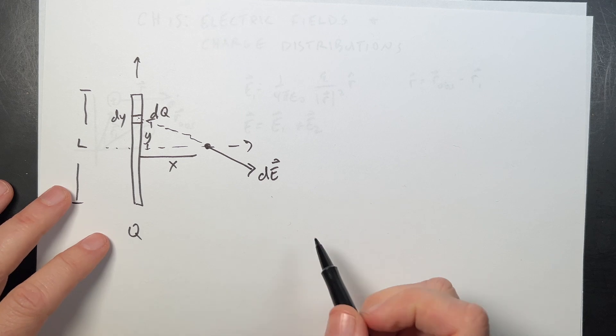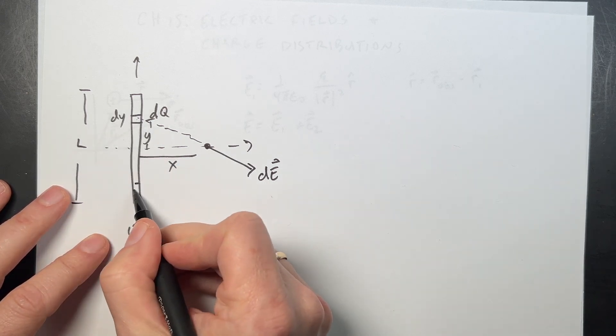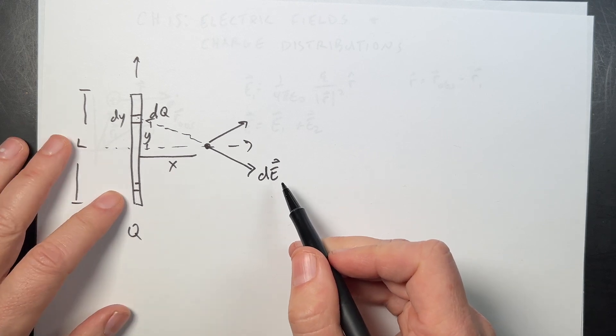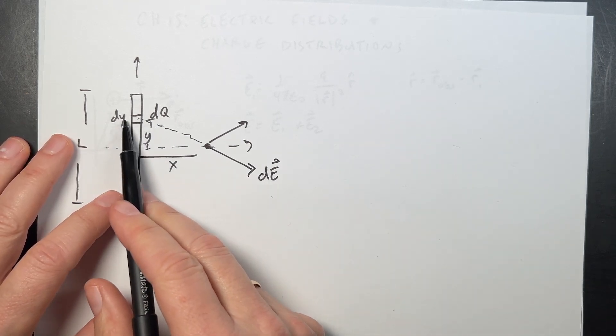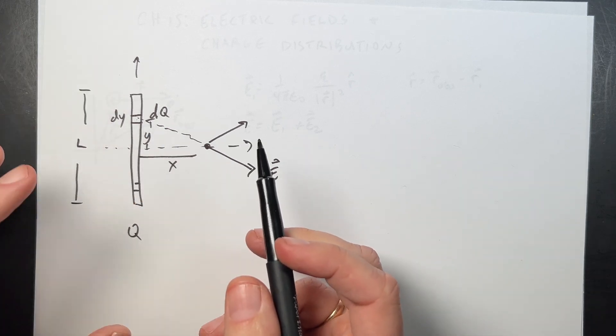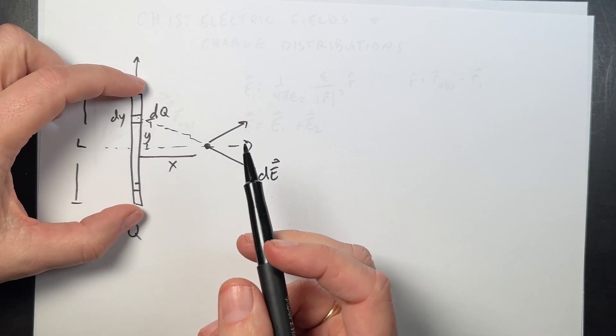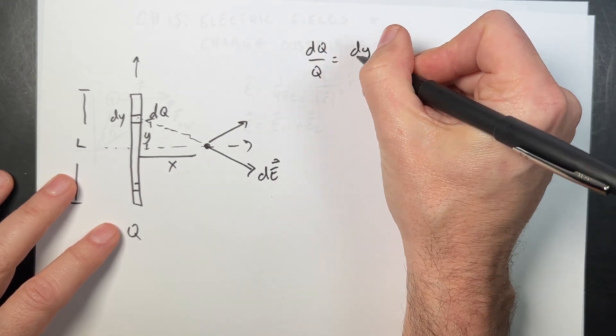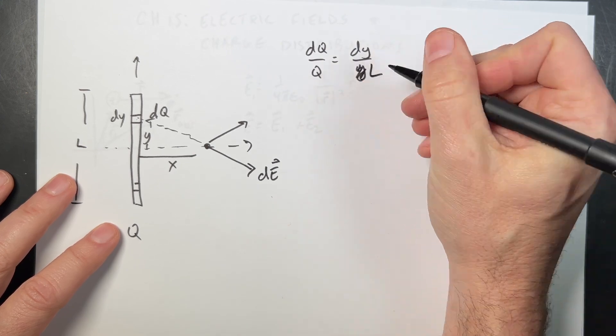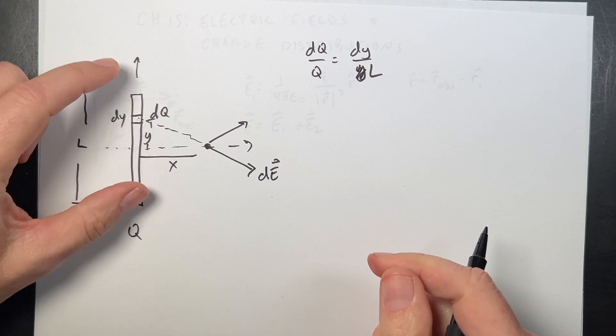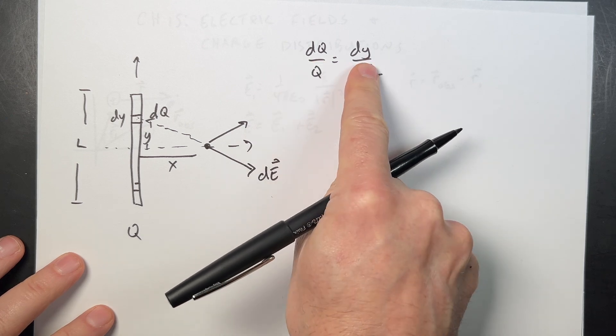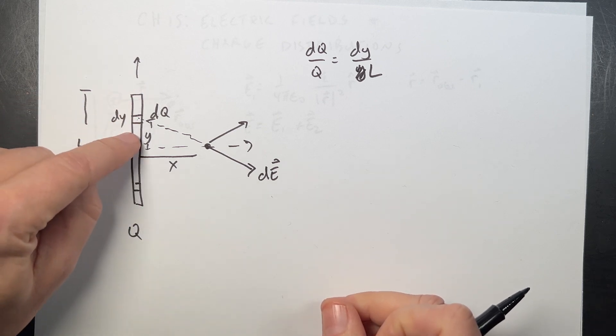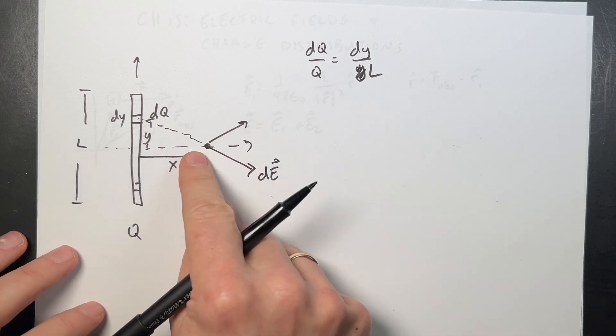Now there's a bunch of tricks here. In first case, if we're in the middle right here, I could pick another piece down here that would make a DE that way. And then only the X component would survive. I also need to get DQ in terms of DY. So if I assume a uniform charge over this rod, then I can say DQ over Q is equal to DY over L. So the ratio of the length to the total length is the ratio of this charge to the total charge. That's important for my integration because I'm going to integrate along Y. My integration variable is going to be Y. I'm going to be adding up all the pieces along Y, not DQ.